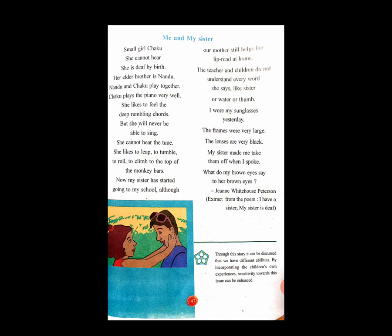I read it. Small girl Chaku. She cannot hear. She is deaf by birth. Her elder brother is Nandu. Nandu and Chaku play together. Chaku plays the piano very well. She likes to feel the deep rumbling chords, but she will never be able to sing. She cannot hear the tone. She likes to leap, to tumble, to roll, to climb to the top of the monkey bars.